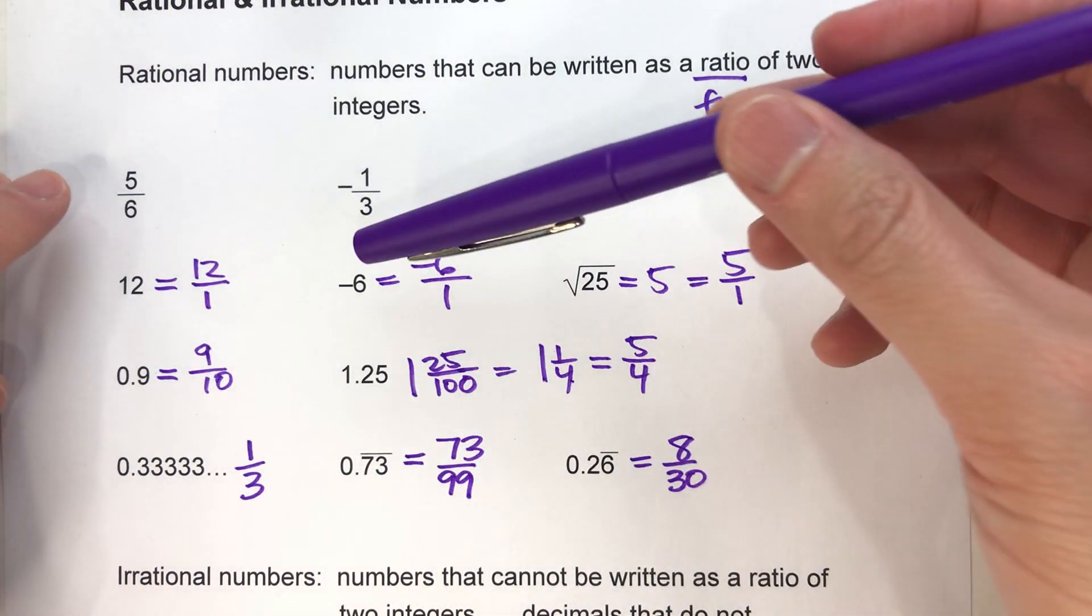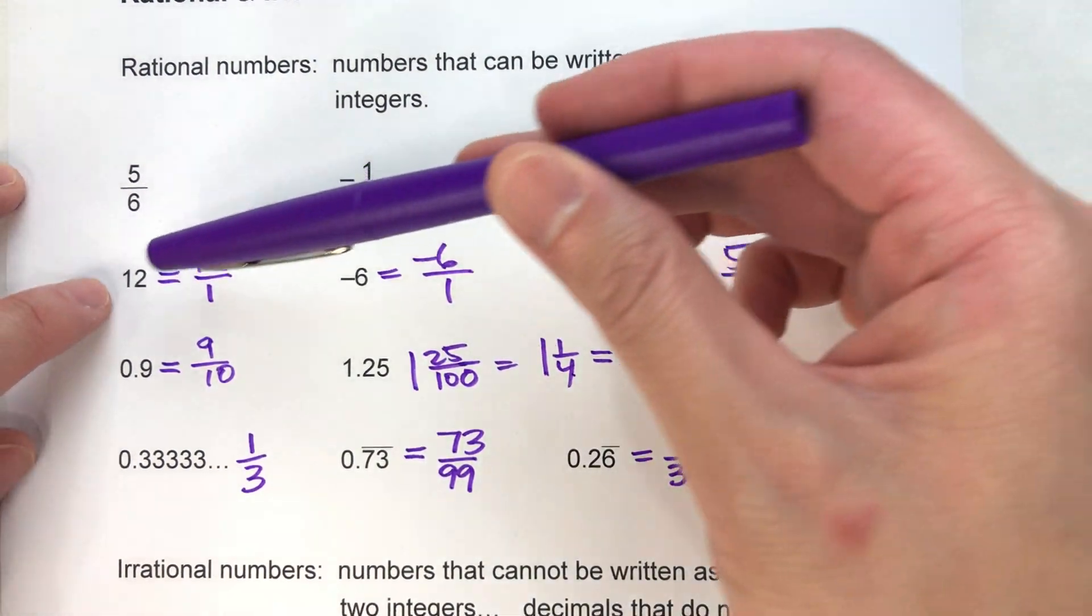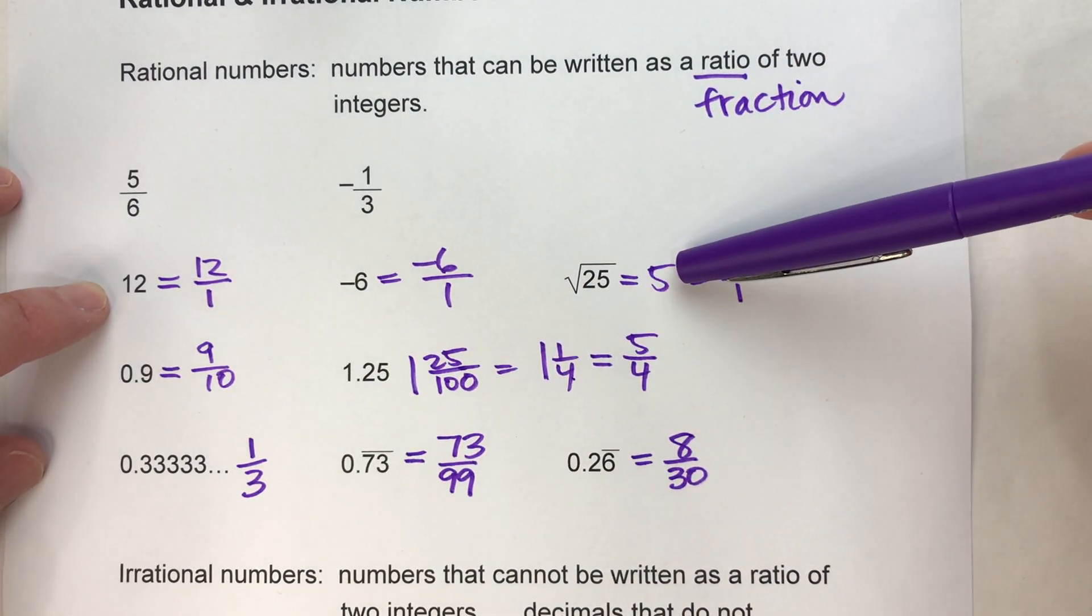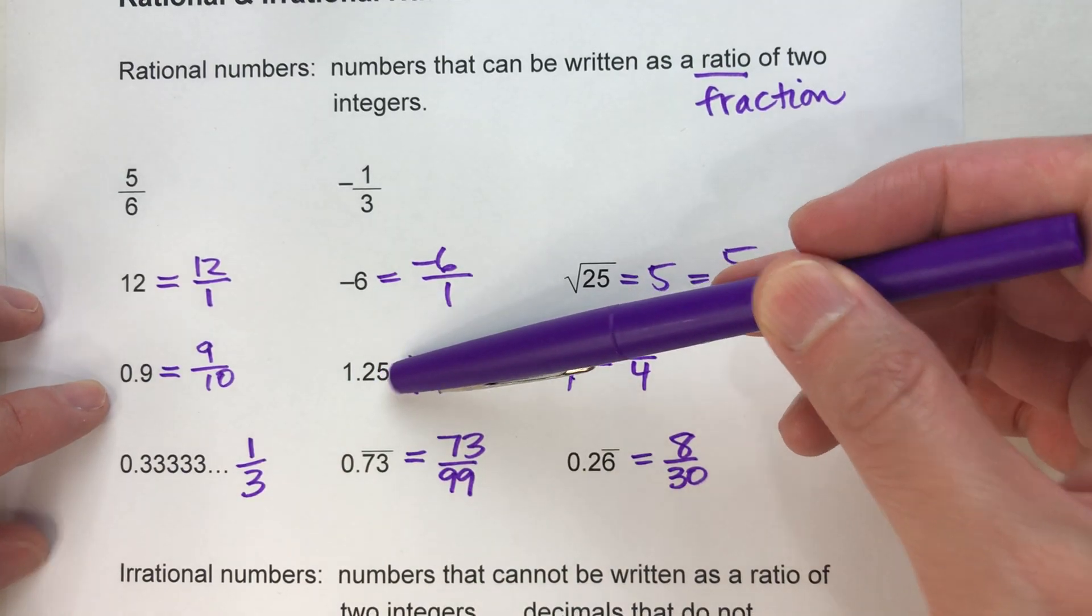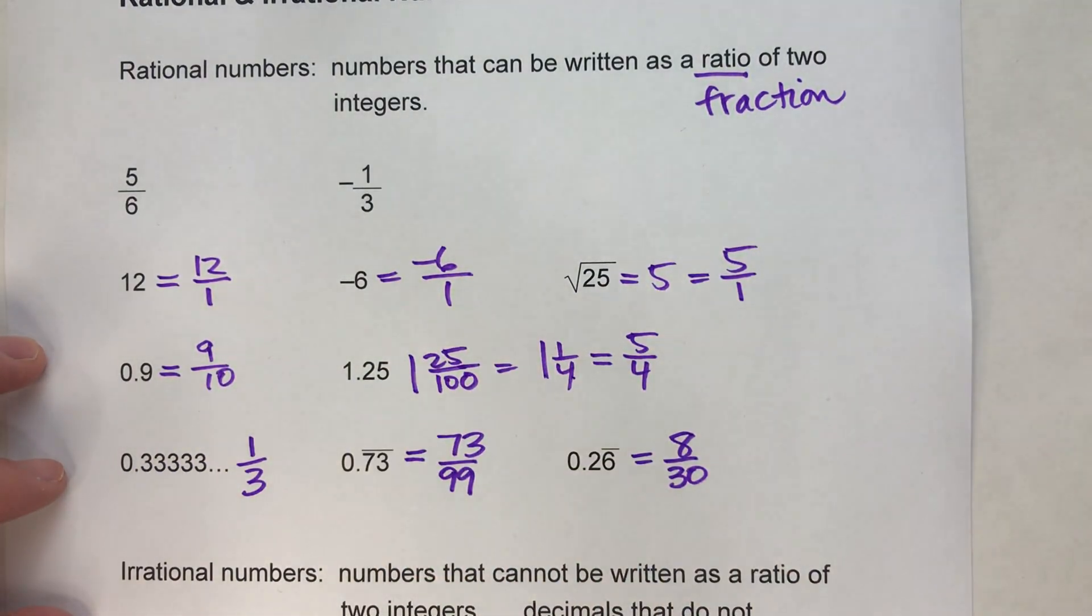Just to recap: all fractions are rational. All whole numbers, or numbers that are equal to whole numbers, are rational. All decimals that end: rational. All decimals that repeat: rational.